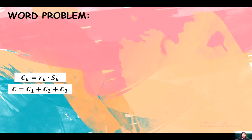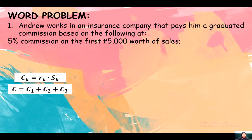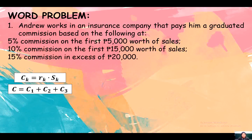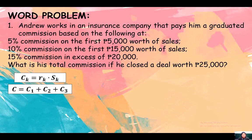Let's apply. Here are our formulas. Our word problem for the graduated commission: Andrew works in an insurance company that pays him a graduated commission based on the following: 5% commission on the first 5,000 worth of sales.